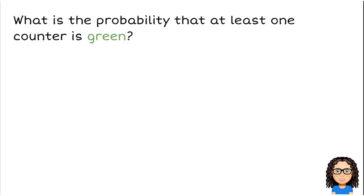What is the probability that at least one counter is green? At least one. What does that mean? At least one means that I could have one counter that is green, or I could have two counters that is green. I couldn't have no counters that are green, but I could have one or more than one. So when we talk about at least, that always means greater than or equal to. So one or more greens.